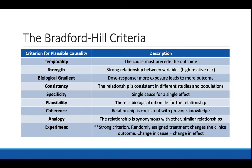These are the Bradford Hill criteria. The cause must precede the outcome. There must be a strong relationship between the variables. There must be a dose response, so more exposure leads to more outcome. The relationship is consistent in different studies and populations. There is a single cause for a single effect. There is a biological rationale for the relationship. The relationship is consistent with previous knowledge. The relationship is synonymous with other similar relationships. And randomly assigned treatment changes the clinical outcome — change in cause equals a change in effect.